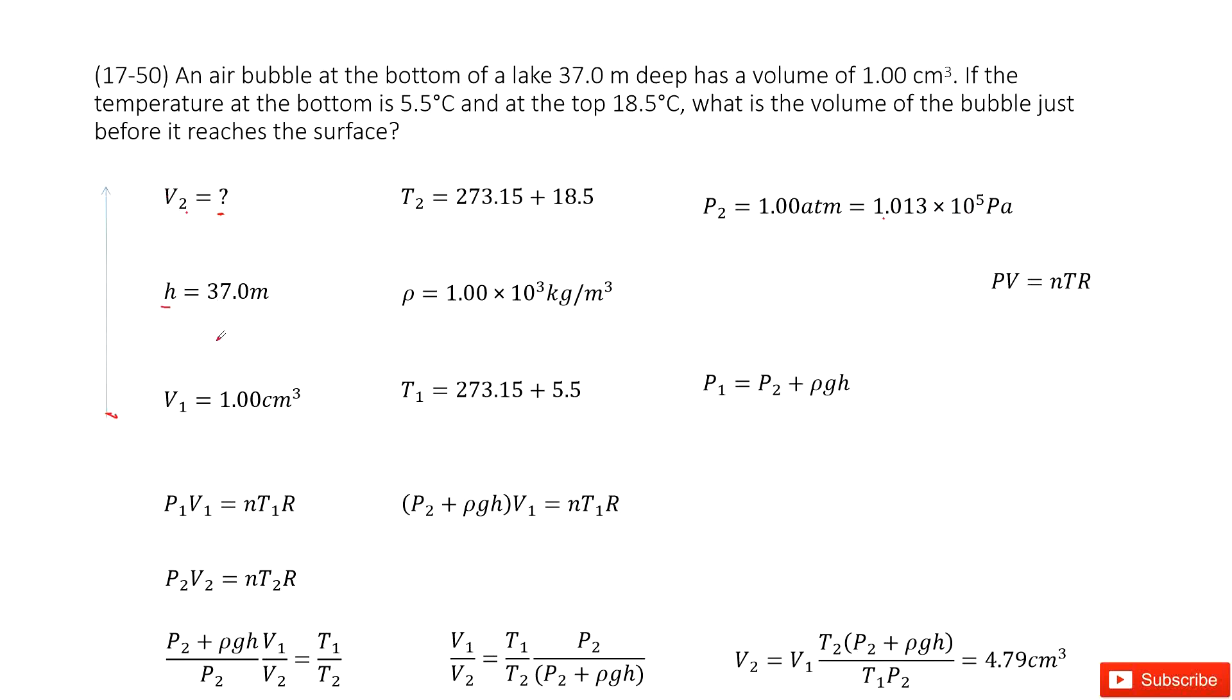For this situation, the air bubble moves up and the volume increases. At the bottom of the lake, the pressure should be P2 plus ρgh. We need to consider the pressure from the air pressure at sea level and also the pressure from this liquid, ρgh.